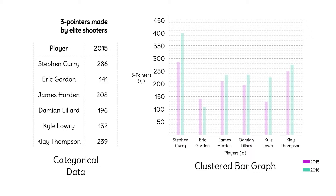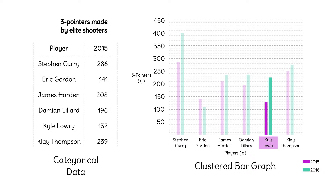Who improved the most? Steph Curry. Which player was the second most improved? Kyle Lowry.